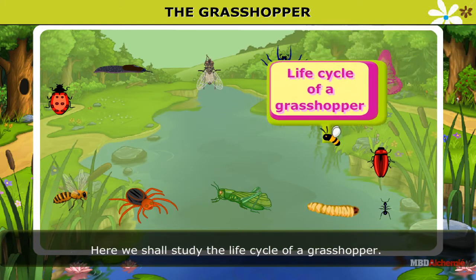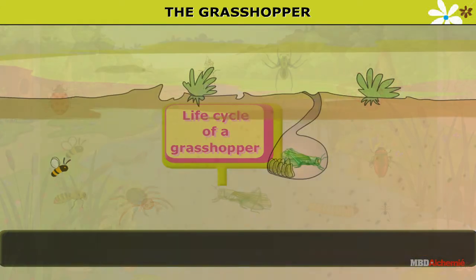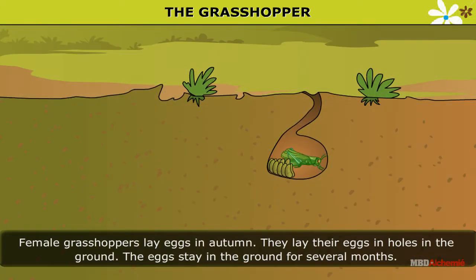Here, we shall study the life cycle of a grasshopper. Female grasshoppers lay eggs in autumn. They lay their eggs in holes in the ground. The eggs stay in the ground for several months.